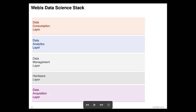Now I want to show you what we consider our technology stack — the data science stack with the Webis flavor. The very basic view has five layers: acquisition, hardware, management, analytics, and consumption. This is the standard stack view very often used in computer science, and I will now flesh it out for you.